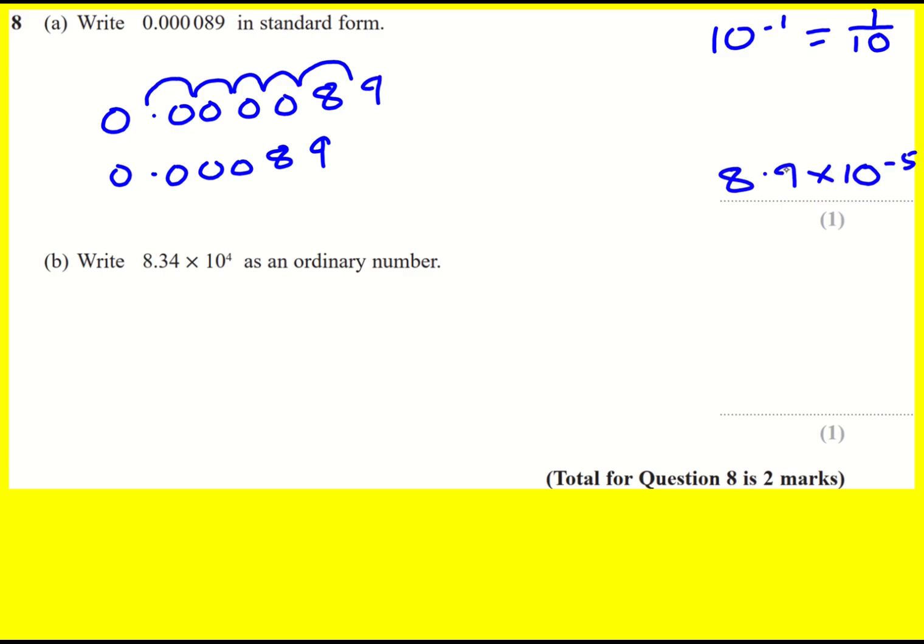Why do we stop there? Because for standard form, this always has to be greater or equal to 1 and less than 10. It's got to be a single, well, I don't want to say a single digit, but between those values, not like 11 or 23 or something like that. So just keep going until you get the decimal point after your first non-zero number.